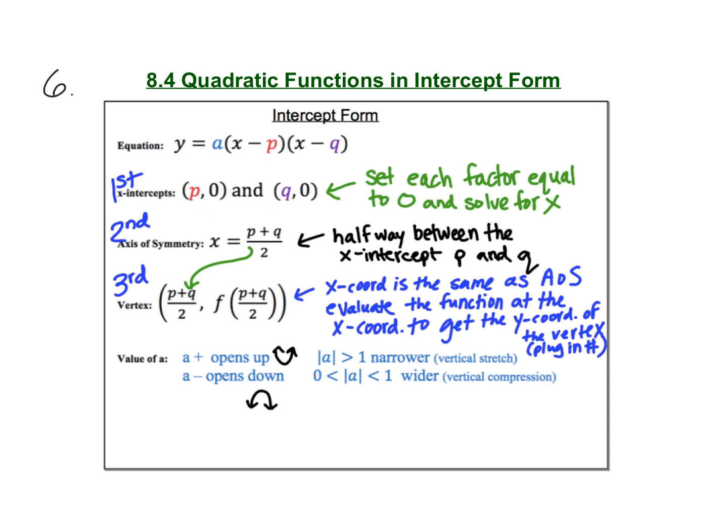The easiest way to find the x-intercepts is to set each of the factors equal to zero and solve for x. It's going to be the opposite of the sign that you see in the equation. Once you have your two x-intercepts, that's your p and your q, and the axis of symmetry is just halfway between them. So to get the axis of symmetry, you add up the p plus the q and then divide it by 2.